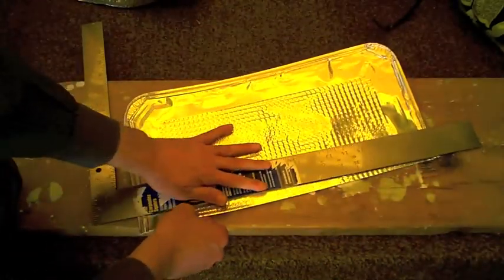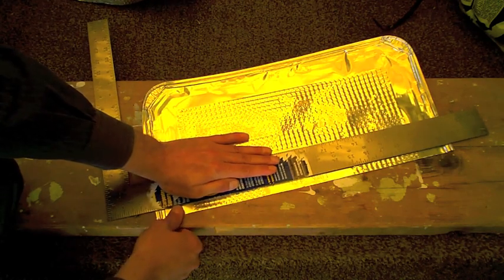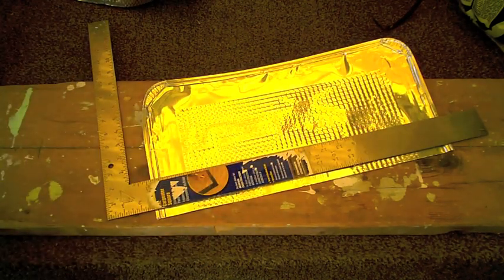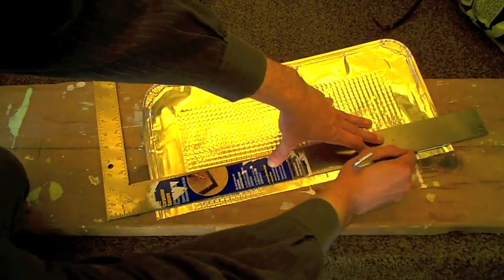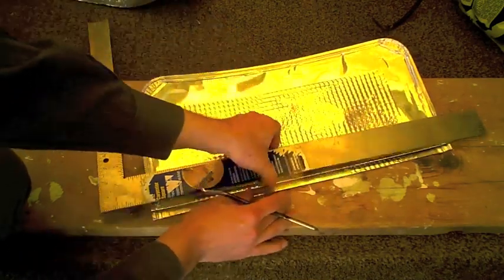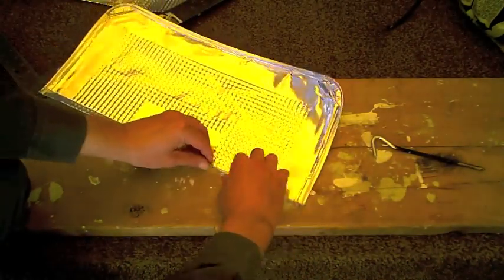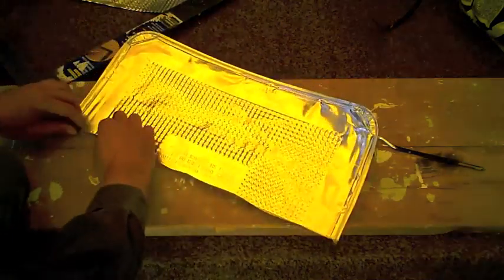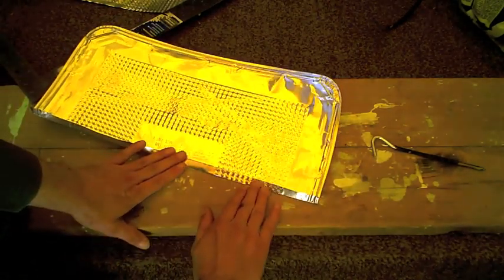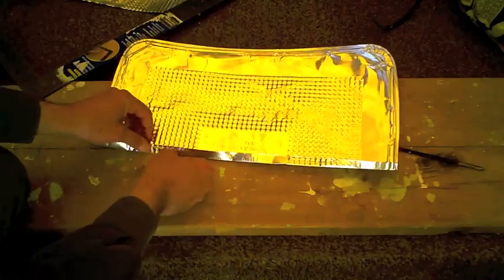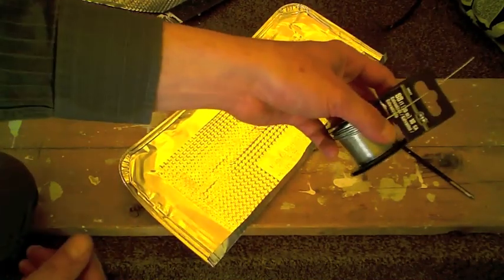So we'll take our straight edge again, go maybe a centimeter and a half, about a half an inch I guess, maybe three quarters. And we're going to score this. So anything will really do to score it, I'm going to use a tent spike in this case. So then we have a pretty reliable score line. We can actually begin to fold that up. So now we have a channel that will actually accept our 18 gauge wire.